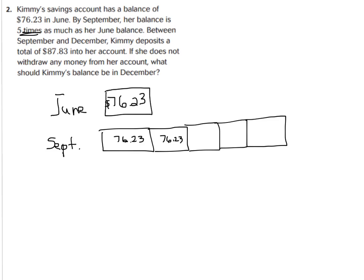Write $76.23 in all five September boxes. I'm going to put my dollar sign here because we are talking about money. Now let's quickly find September's total: $76.23 times five. In our diagram, we showed $76.23 five different times. You can either do repeated addition or just multiply.